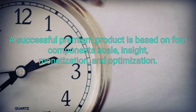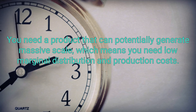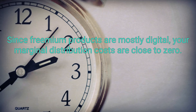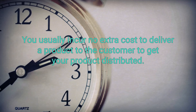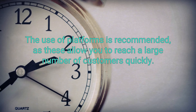A successful freemium product is based on four components: scale, insight, monetization, and optimization. You need a product that can potentially generate massive scale, which means you need low marginal distribution and production costs. Since freemium products are mostly digital, your marginal distribution costs are close to zero. You usually incur no extra cost to deliver a product to the customer. To get your product distributed, the use of platforms is recommended, as these allow you to reach a large number of customers quickly.